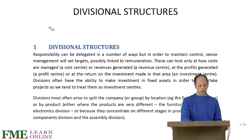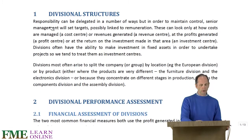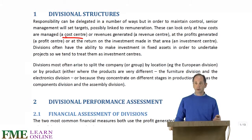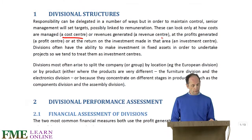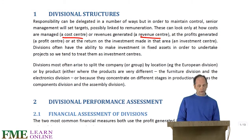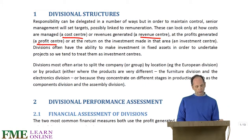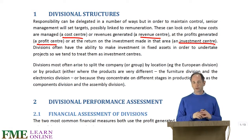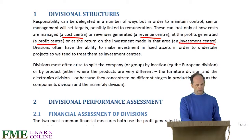So, divisional structures - we can organise a company in a variety of ways and delegate responsibility in a number of ways. We might let people be in charge of costs, a cost centre, or in revenue. A sales department might only look at revenue generated and not worry about costs. It could be a profit centre with both revenue and costs, or for a division, most likely an investment centre, because divisions quite often have some control over whether or not to invest in certain projects.